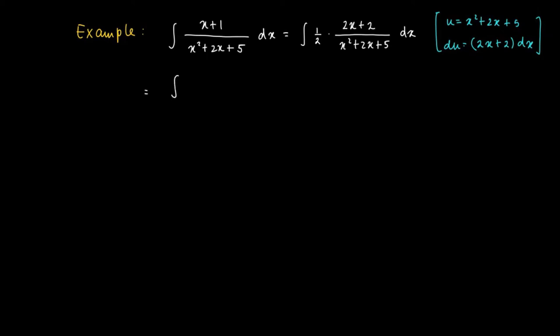So that we are left with the integral 1 over 2 times 1 over u, which of course has as a primitive a half times ln absolute value u plus c.